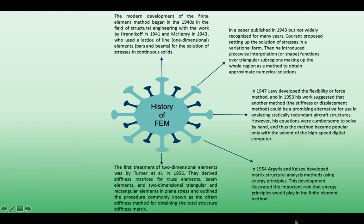The first treatment of two-dimensional elements was by Turner et al. in 1956. They derived stiffness matrices for truss elements, beam elements, and two-dimensional triangular and rectangular elements in plane stress and outlined the procedure commonly known as the direct stiffness method for obtaining the total structure stiffness matrix.